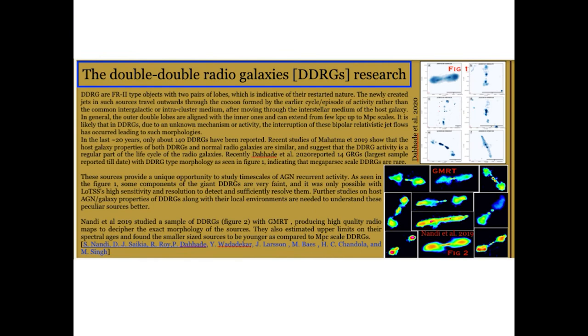Another interesting thing about radio galaxies is some of them showing episodic activity. This means that after producing bipolar jets, the AGN remains inactive for about 10^6 to 10^7 years, then again becomes active to form a new episode of jets.